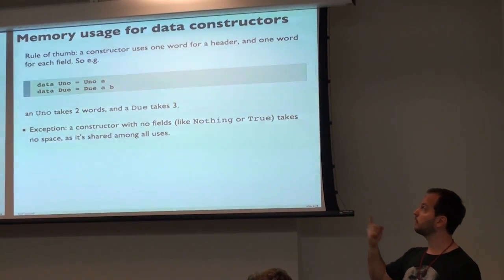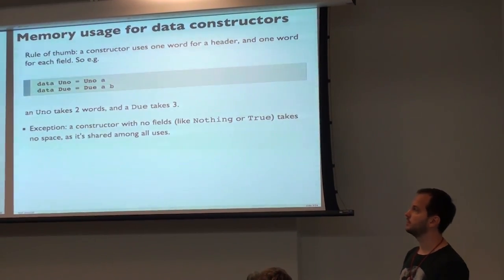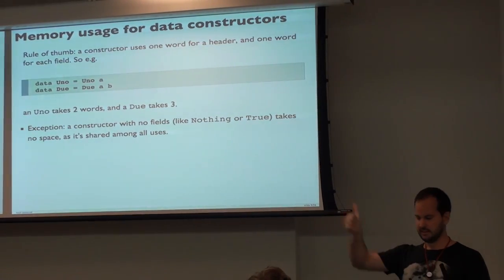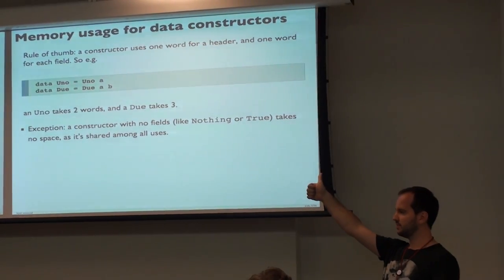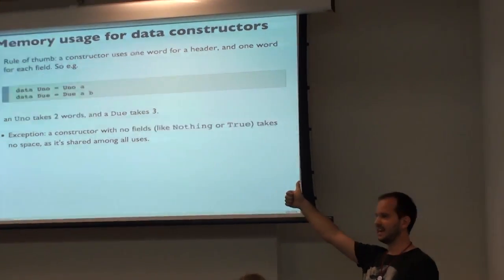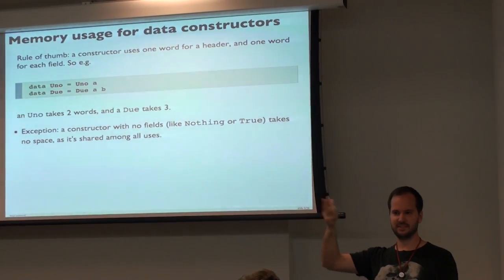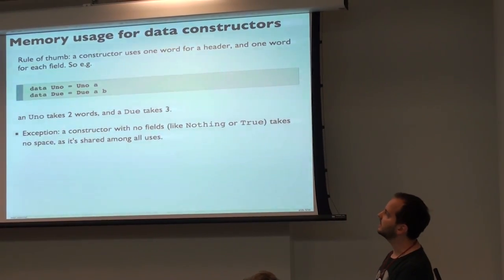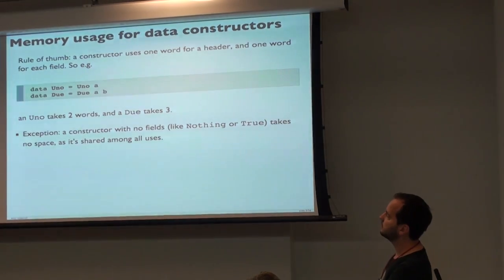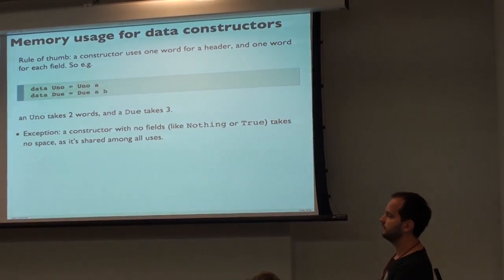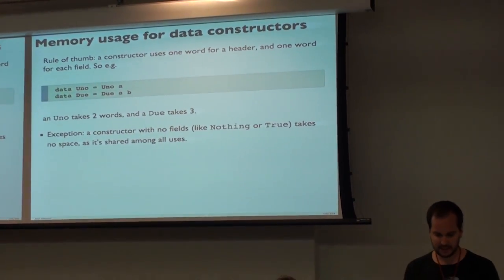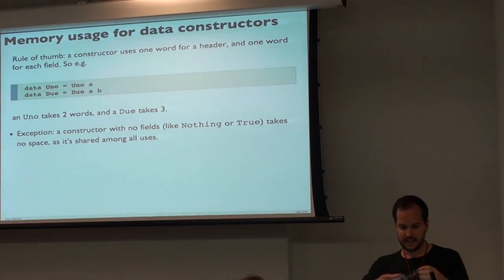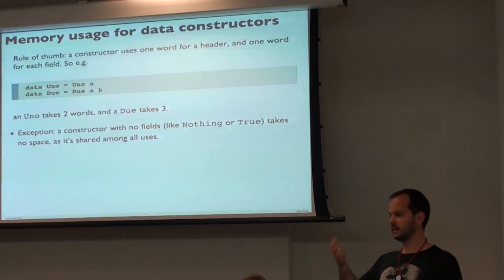We have about one word per version. So it's one for the constructor, and then count the fields: one field, two fields, three fields. So the first example here takes two words — one for the constructor, one for the field. I mean, it's basically a pointer to the field.